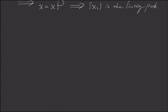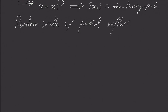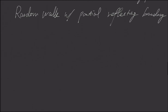In this video, we're going to learn a very famous example of a time-reversible Markov chain. It is a random walk with a partial reflecting boundary. In the previous gambler's ruin problem, we learned that the two ending states are absorbing — meaning if we hit there, we stay there forever. But for this random walk, it's not.